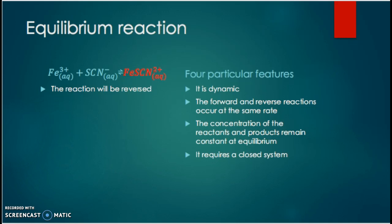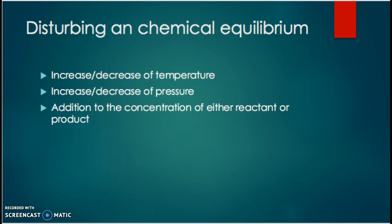In this experiment, we wanted to see how you could disturb a chemical equilibrium. You can disturb it by either increasing or decreasing the temperature, or increasing or decreasing the pressure, or by adding to the concentration of either reactants or products. When the chemical equilibrium is disturbed, the direction will either go to the left or to the right to reestablish the equilibrium. In this experiment, it was very clear whether reactants or products were being formed, due to the color change happening.